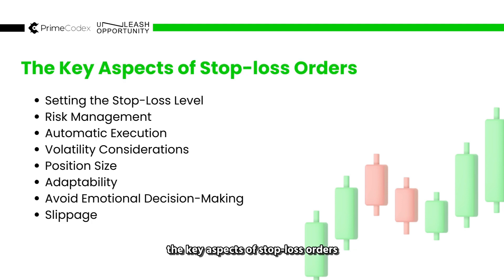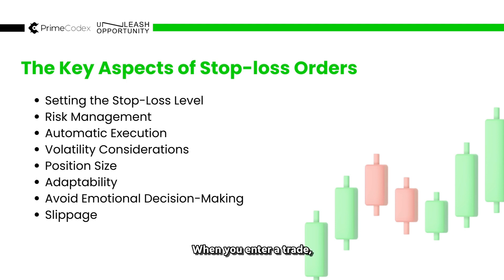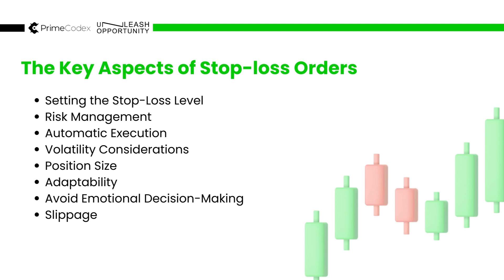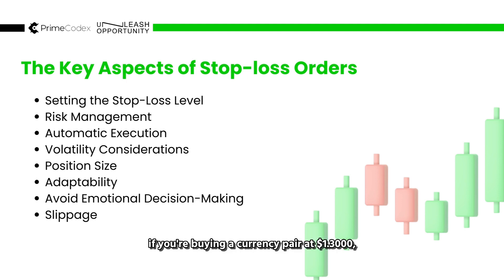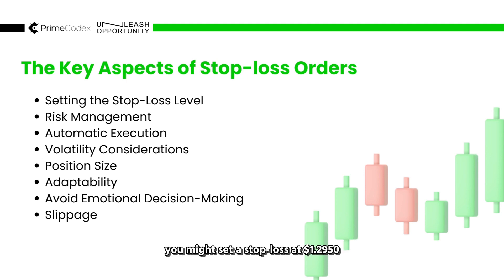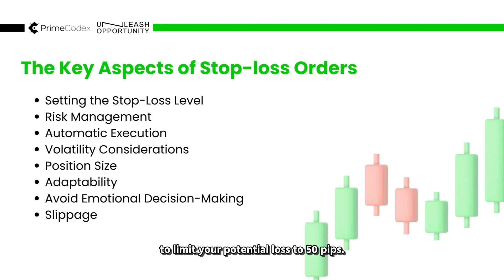The key aspects of stop loss orders. First is setting the stop loss level. When you enter a trade, you will choose a price level at which you want the stop loss to trigger. This level is typically determined based on your trading strategy, risk tolerance, and technical analysis. For example, if you are buying a currency pair at 1.3000, you may set a stop loss at 1.2950 to limit your potential loss to 50 pips.